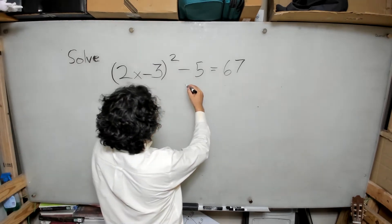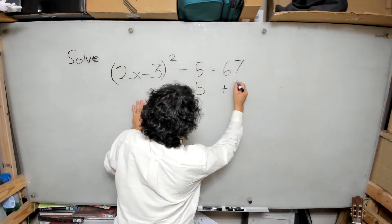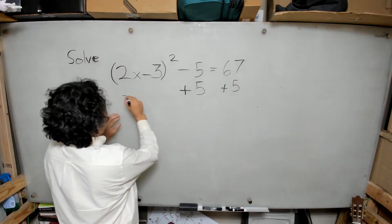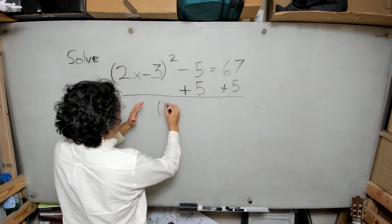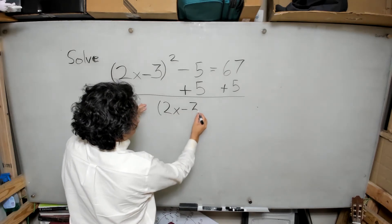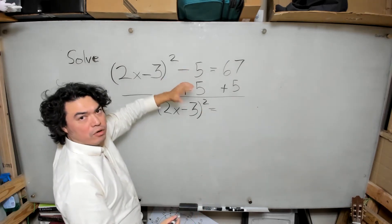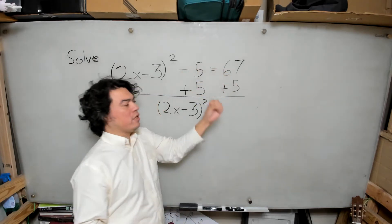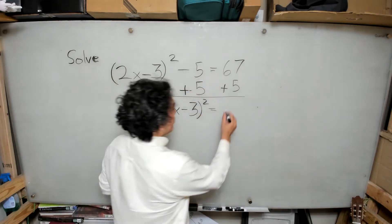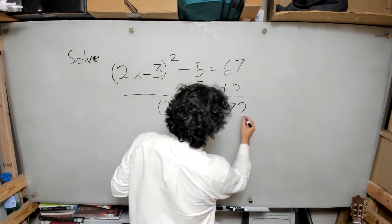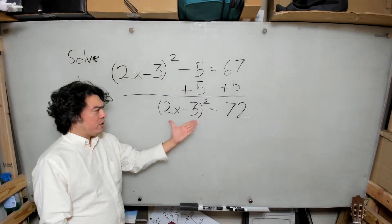I'm going to add the 5 to the other side. So (2x minus 3) squared comes down, and the negative 5 plus 5 goes to 0. Then on the right side, 67 plus 5 gives us 72. So we get (2x minus 3) squared equals 72.